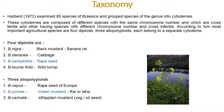Brassica nigra is called black mustard or Banarasi rai. Brassica oleracea is cabbage, Brassica campestris is rapeseed, and Brassica tournefortii is wild turnip. The 3 allopolyploids are Brassica napus (rapeseed of Europe), Brassica juncea (rai, laha, or Indian mustard), and Brassica carinata (vegetable or oil mustard).